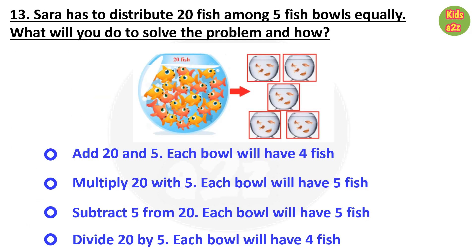Question 13: Sara has to distribute 20 fish among 5 fish bowls equally. What will you do to solve the problem? Sara needs to divide 20 fish among 5 fish bowls, so she divides 20 by 5. The fourth statement is correct — divide 20 by 5, and each bowl will have 4 fish.